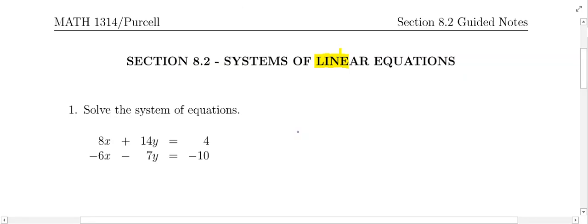In number one, our system is the following. We have 8x plus 14y equals 4. And the other equation is negative 6x minus 7y equals negative 10. How the elimination method works is this.